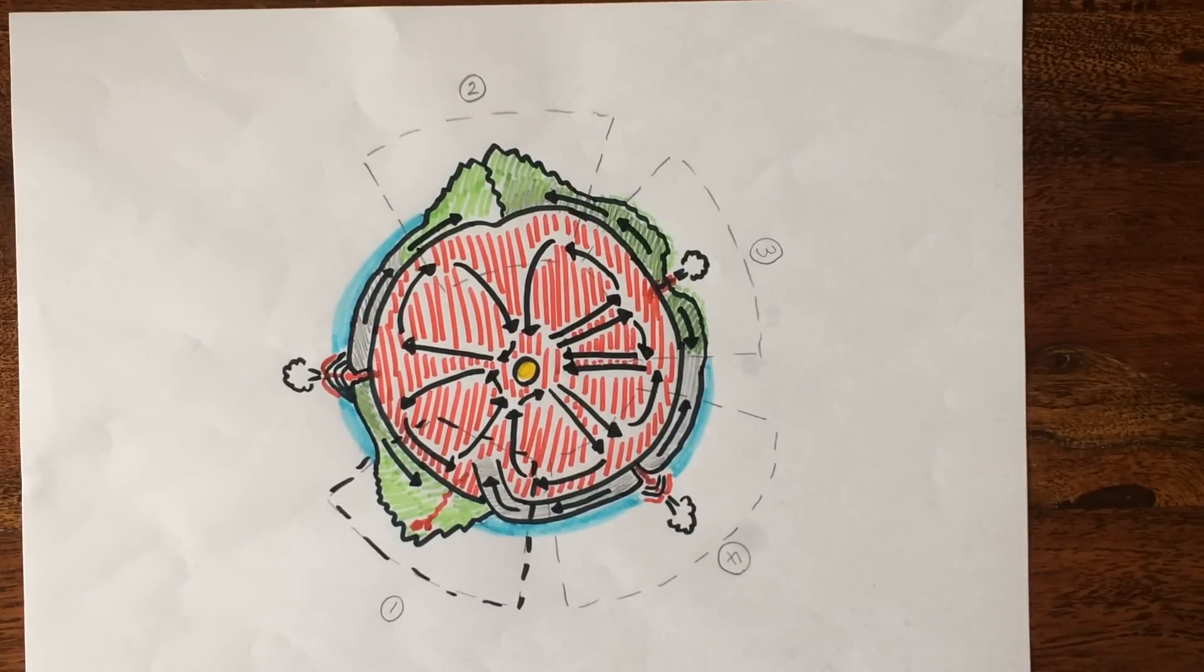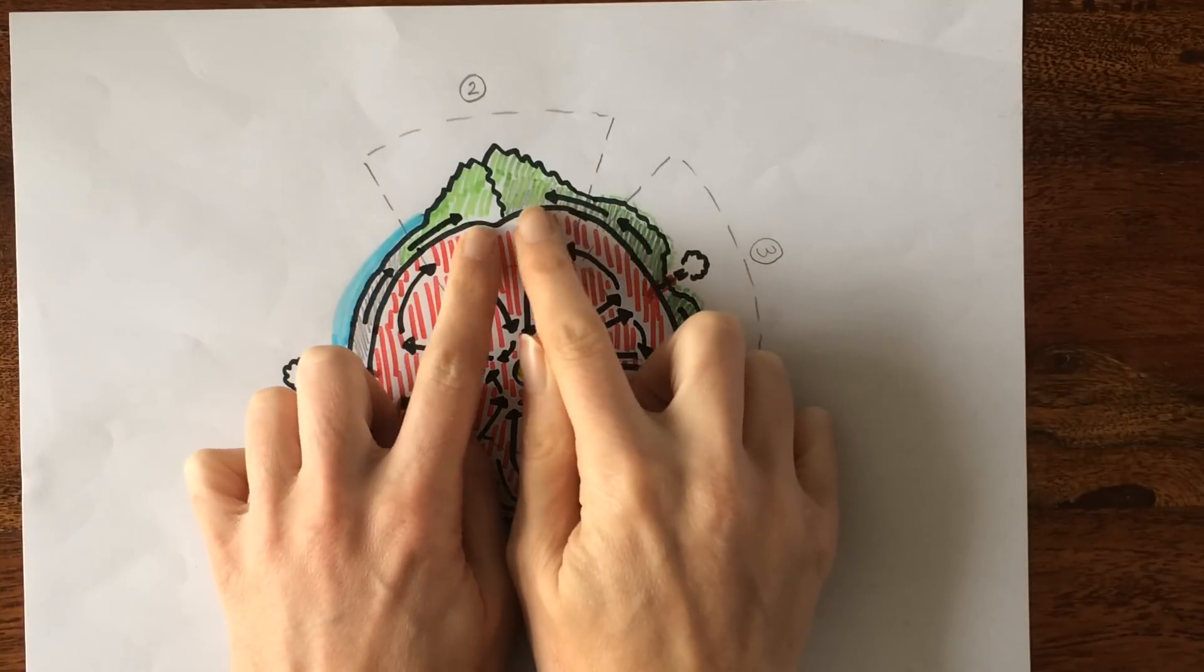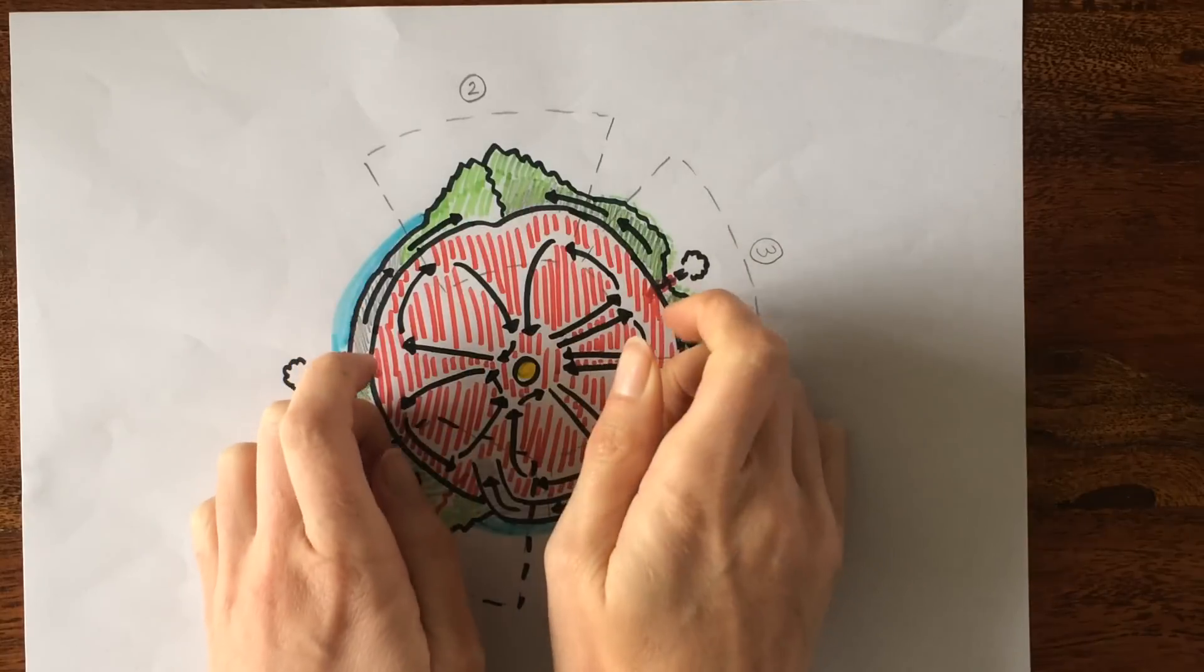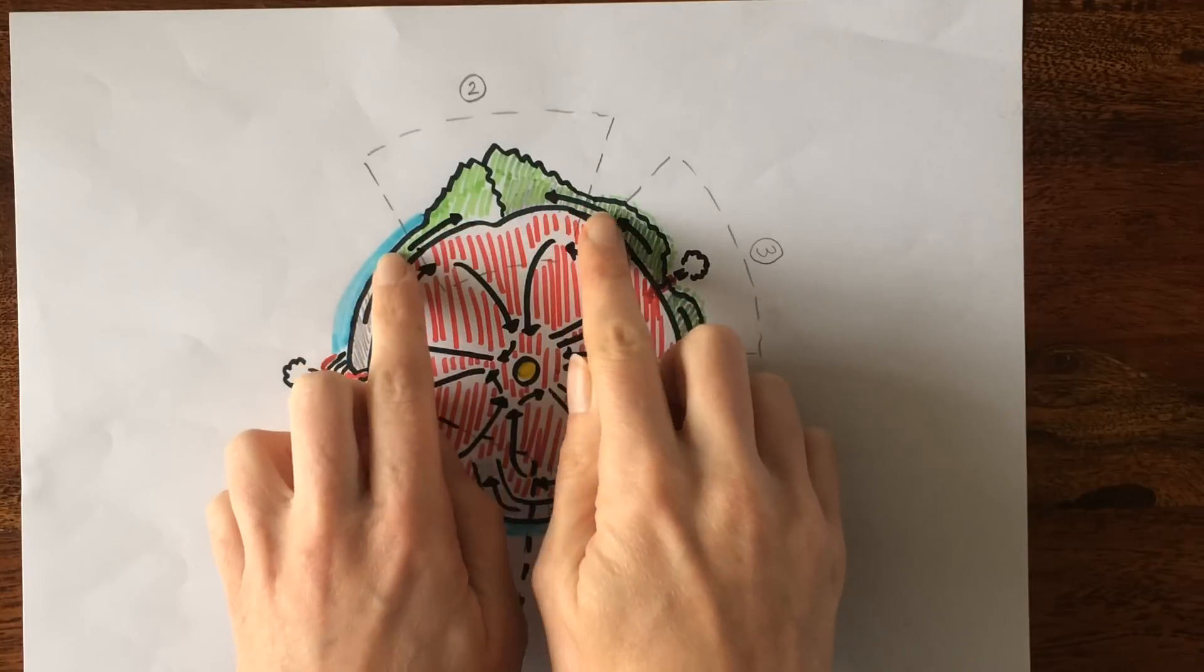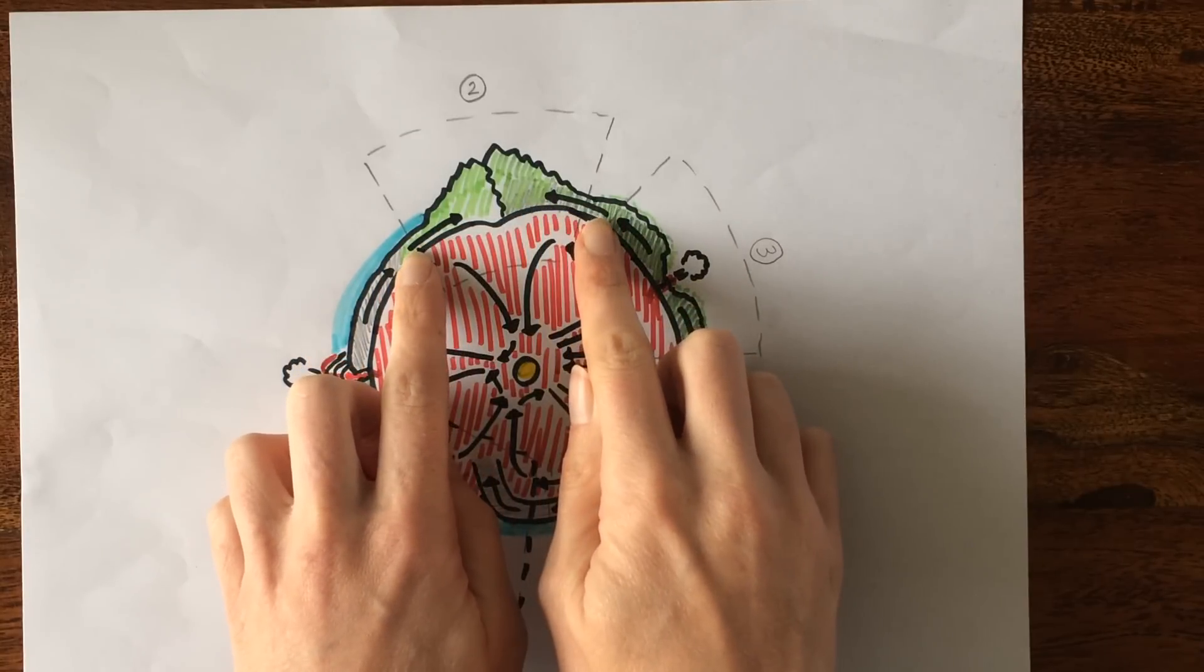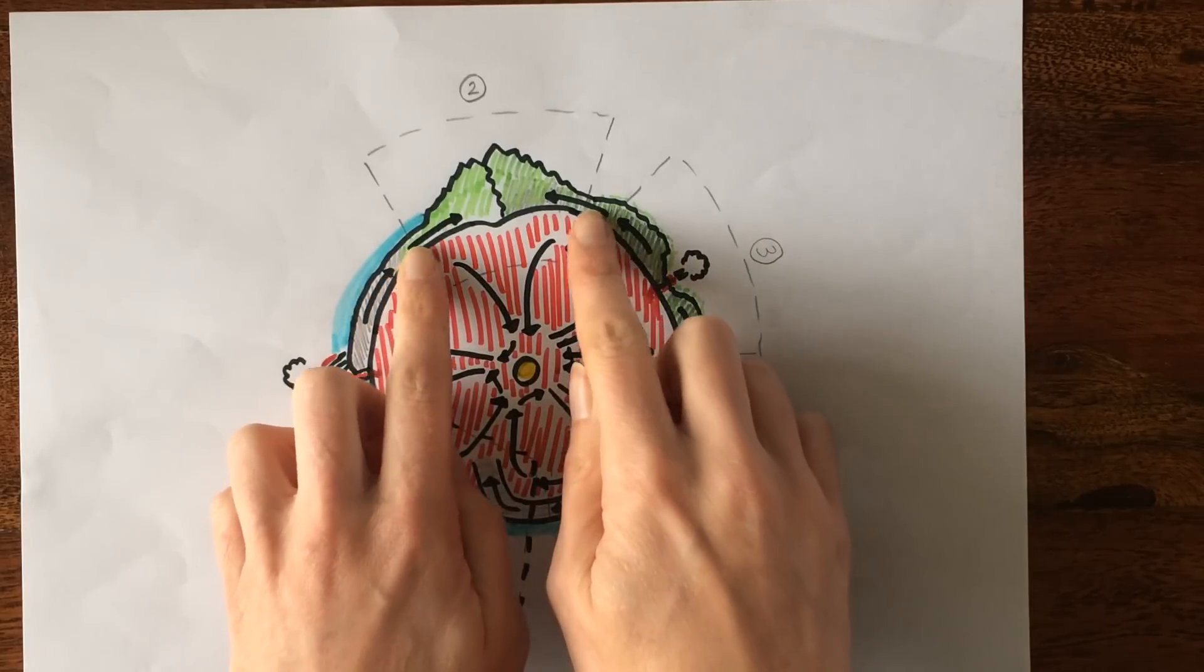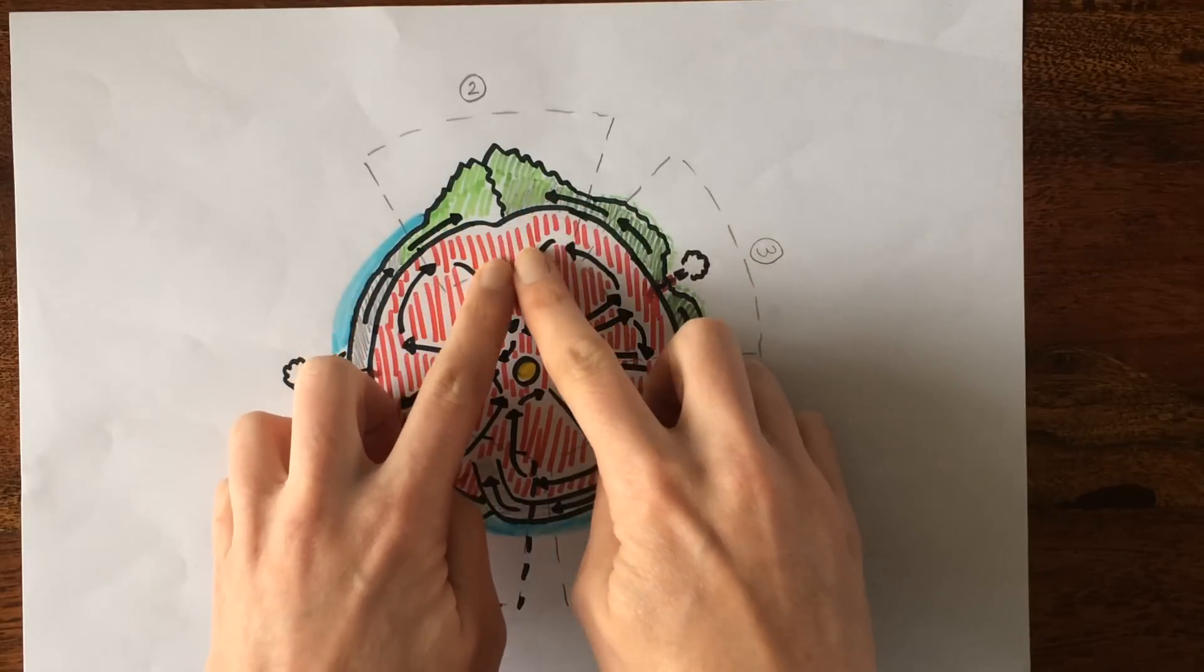On this plate boundary we're going to be looking at what happens when two pieces of continental crust come together. So this is a destructive plate boundary just like the one we've looked at previously, but the difference with this one is that both of these pieces of crust are continental, so they're the same type of rock and the same thickness and density. So in this example neither of these pieces of crust will go into the mantle.